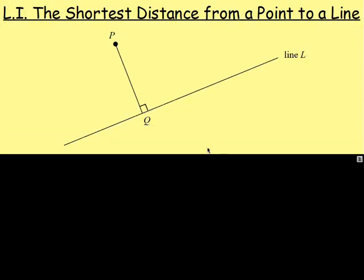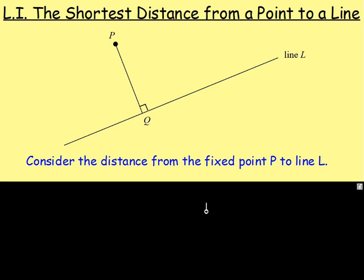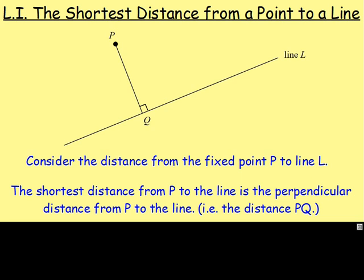Let's start off with a little diagram. We can see that we have this line — let's call it line L — and we've got this fixed point P. We are wanting to consider the distance from that fixed point to line L. What you will notice is that the shortest distance from point P down to that line will always be the distance that is at right angles to the line. So the shortest distance from P to the line is the perpendicular distance from P to the line.